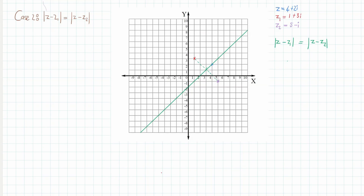I've given z₁ = 1 + 3i, plotted here, and z₂ = 5 − i, plotted over here. I've drawn a dotted line between them — the line that joins them. To find the perpendicular bisector, I find the midpoint, which is at (3, 1), and then draw a perpendicular line through it.